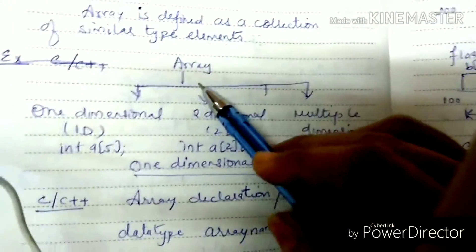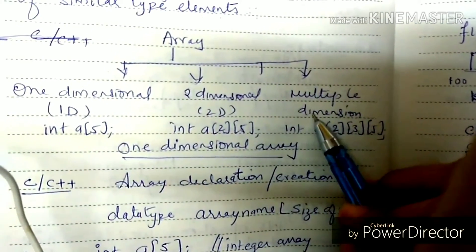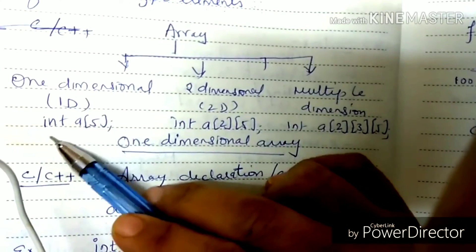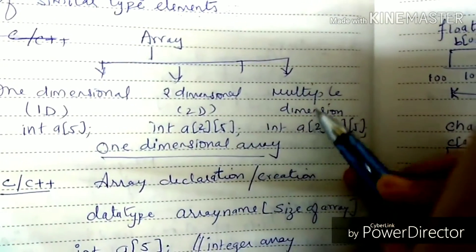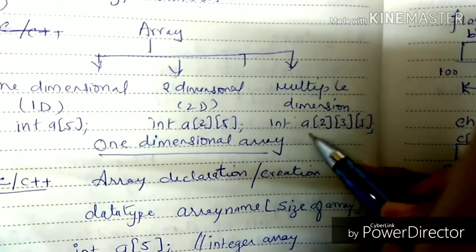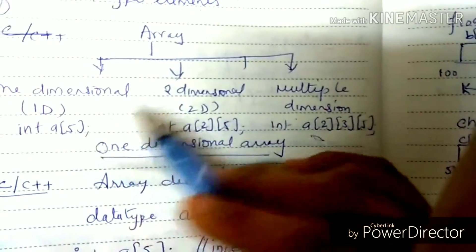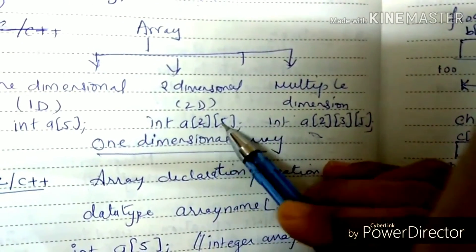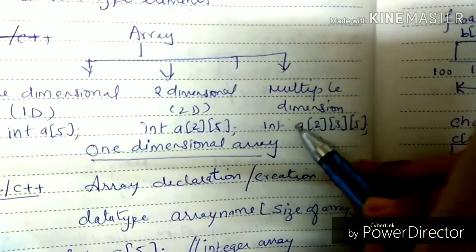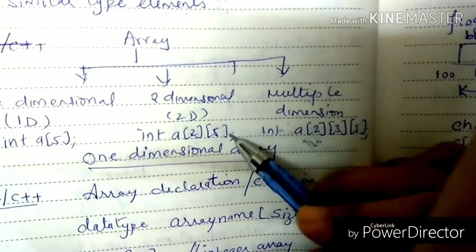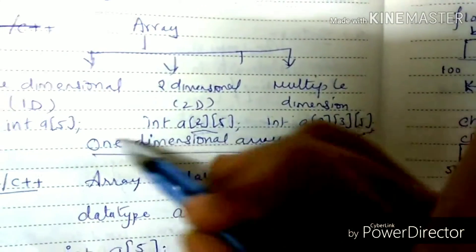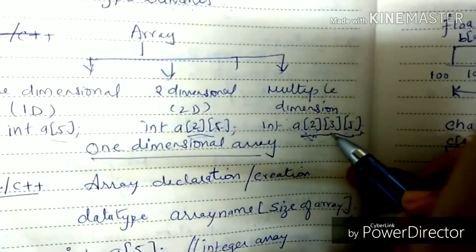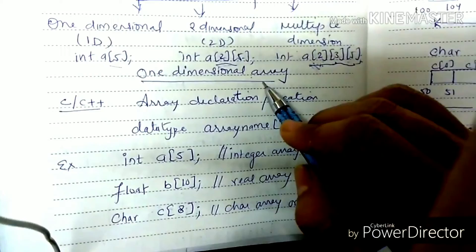Now, an array can be one dimensional, two dimensional, or multiple dimensions. One dimensional has one size, two dimensions have two sizes, and multiple dimensions have multiple sizes. So that's the first topic — one dimensional array.